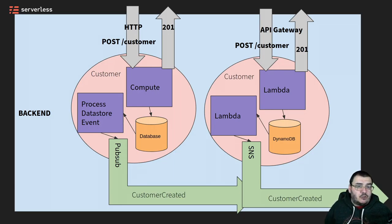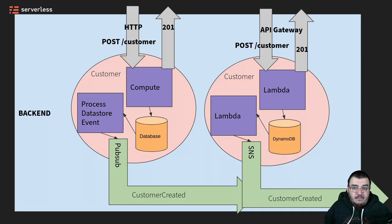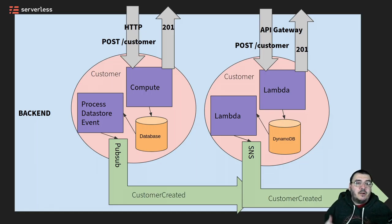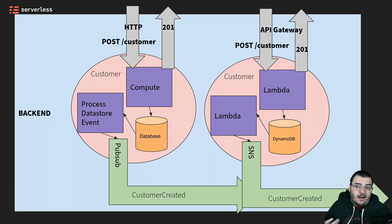That Lambda function is going to execute code, process the data received in that POST request, and store that data in DynamoDB — our database layer. DynamoDB has a feature called DynamoDB Streams where it can trigger an additional Lambda function when a state change happens to data in the table. So when DynamoDB has a new record added, it's going to trigger a Lambda function, and that Lambda function is going to determine this is a customer created event — therefore, emit a message into the customer created SNS topic. SNS is a pub/sub service inside AWS.